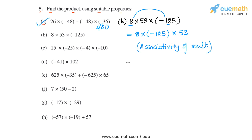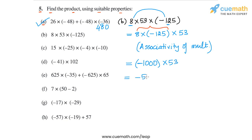This property says you can multiply integers in any order. Now 8 into minus 125 equals minus 1000, since the magnitude is 1000 and one integer is negative. Then minus 1000 into 53 equals minus 53,000. So in part B, the value of the product is minus 53,000.